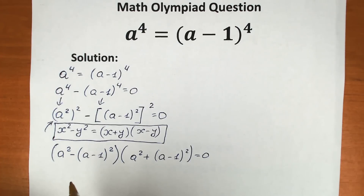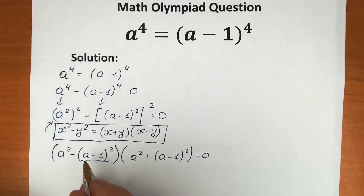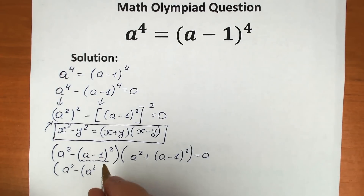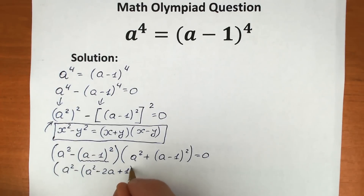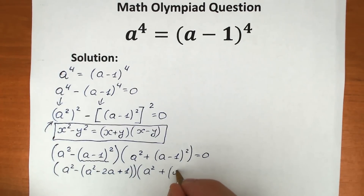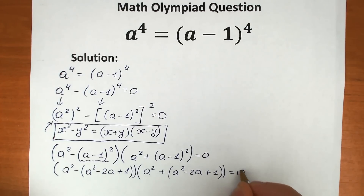Now let's simplify a little bit. We know the formula for (a minus b) squared: a squared minus 2ab plus b squared. So the first parenthesis expands as a squared minus (a squared minus 2a plus 1). The second parenthesis gives us a squared plus (a squared minus 2a plus 1), equal to zero.